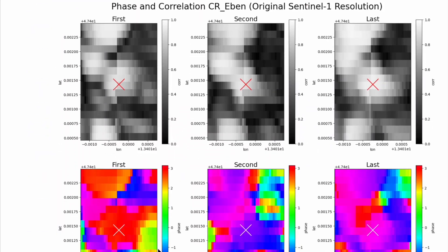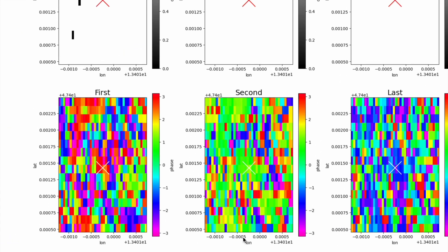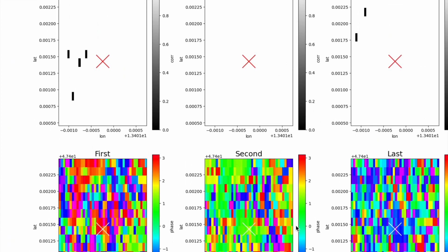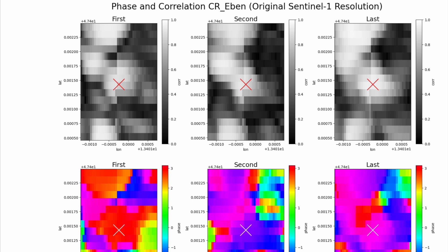We can compare how the small areas look for phase and correlation around the corner reflector marked here. We see that the phase is much better than in the previous example. So these phase and correlation grids can be analyzed.